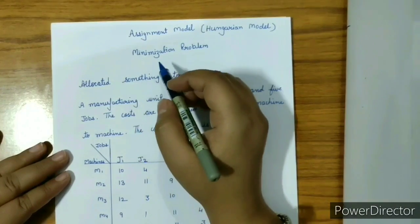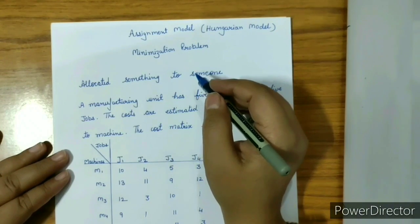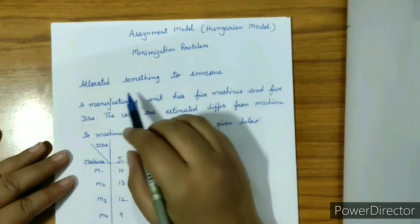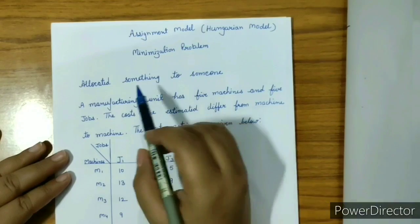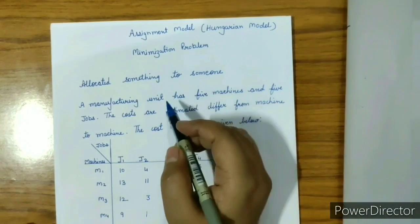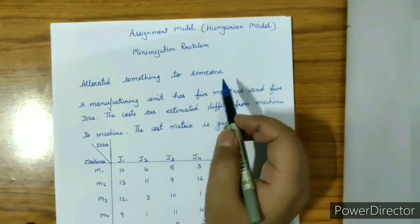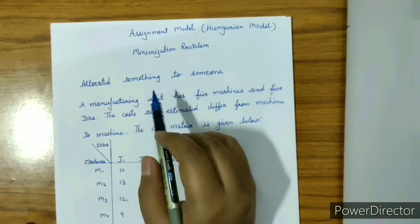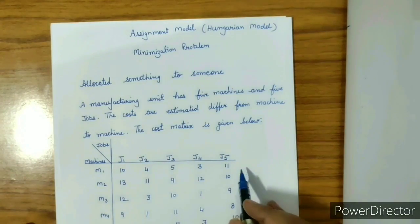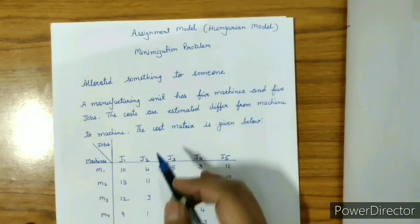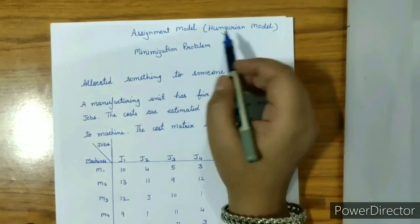Good morning students. Today I am going to explain how to solve the assignment model. Let us start with the basic introduction. Assignment model means allotment of something to someone. These two terms are very important: something can be a job or any task, and someone can be any machine or even any person. So basically a job can be performed by a person or any machine. This model was introduced by Hungarians, so it is known as the Hungarian model.